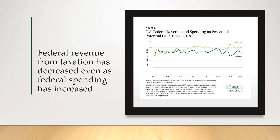Federal revenue from taxation — how much the government collects — has also declined even as spending has increased. Those two lines stayed close together until the 1980s, after which spending outpaced revenue as taxes were cut while the federal government continued to spend the same or more. As a percentage of GDP, you can see the divergence of those lines, especially recently, where spending is outpacing revenue largely because revenue has declined as tax rates have declined.